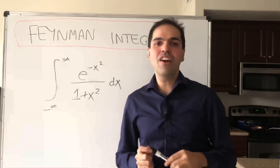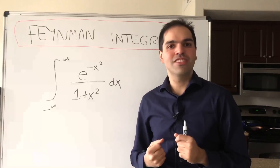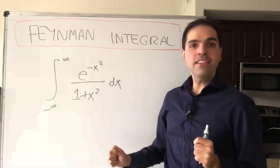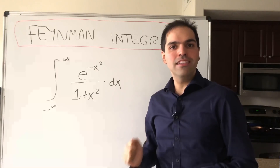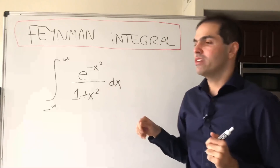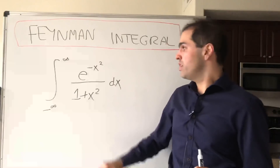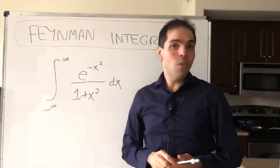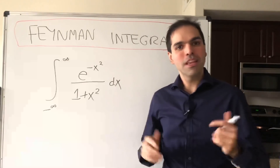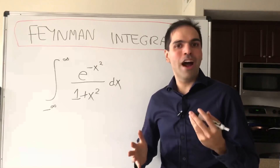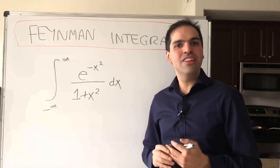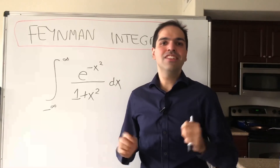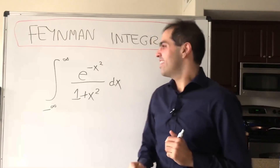Alright, thanks for watching. Today I would like to evaluate a very interesting integral using Feynman's technique, namely the integral from minus infinity to infinity of e^(-x²) / (1 + x²) dx. Who will reign supreme — the normal distribution or the arctangent part? Watch this video to find out. I would also like to thank Michael Reilly for suggesting this video to me back in 2018, so patience is a virtue. Thank you again.